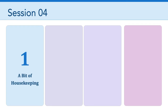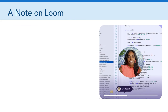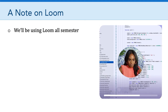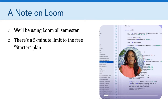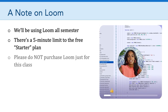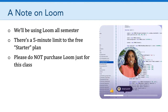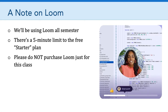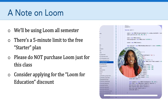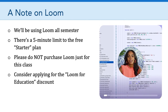First up, we have a bit of housekeeping to attend to. Some of you have shared that you're running into the limits of the 14-day free trial of Loom. I want to point out that we'll be using Loom all semester and that there is a five-minute limit to your recordings that comes with the free starter plan that Loom offers. I want to emphasize you do not need to purchase Loom just for this class. If you like Loom and you can use it in other places in your life, then by all means go ahead and make the purchase, but you don't have to. There are two possible workarounds for you to consider. One is you can apply for the Loom for Education discount — they're really generous with that discount and you can use your hawaii.edu license to apply for that. So that's an option for quite a few of you in this class.